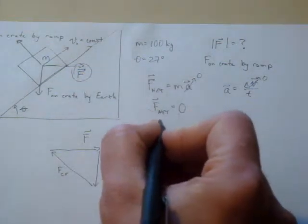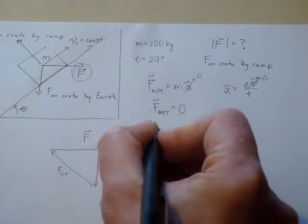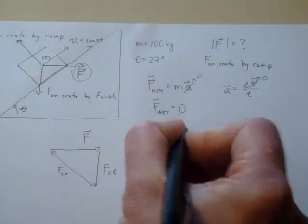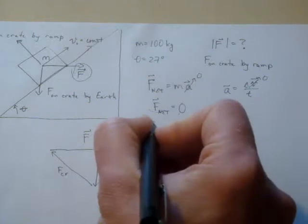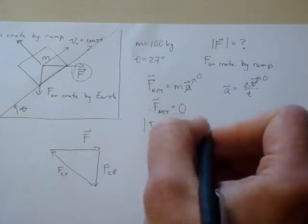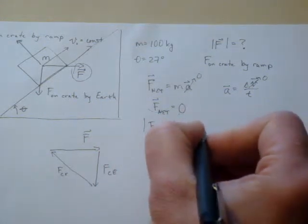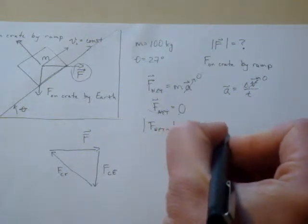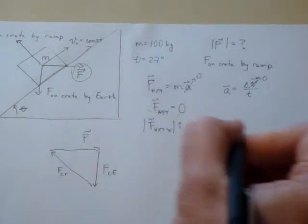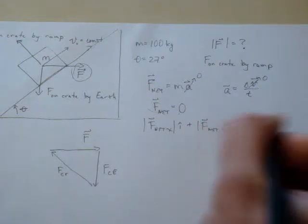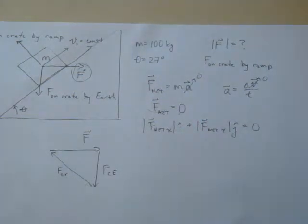This is a vector quantity which has information. The net force in the x direction î plus the magnitude of the net force in the y direction ĵ is going to be equal to zero. And similarly a k̂ as well, if we had a third dimension.